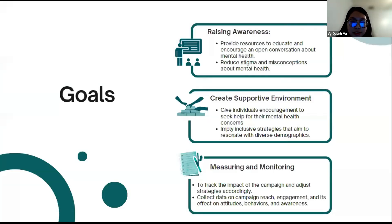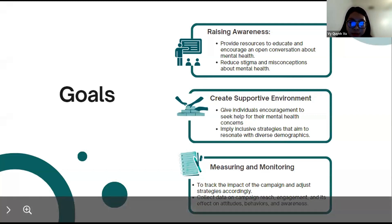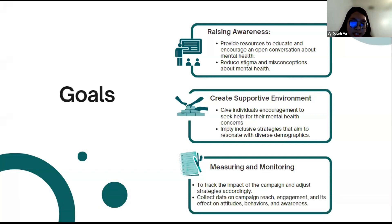The campaign has three main goals: raising awareness about mental health, creating a supportive environment, and measuring and monitoring the campaign progress. For the first aim, I want the campaign to offer resources about mental health where individuals can enhance their understanding about that topic, as well as breaking down the stigma surrounding mental health — that can include the assumption that a person who has a mental illness will be considered a danger or a burden to society.